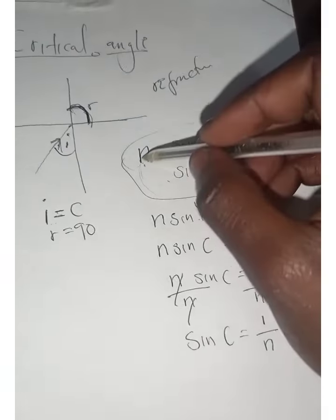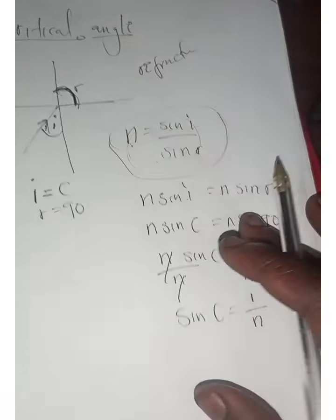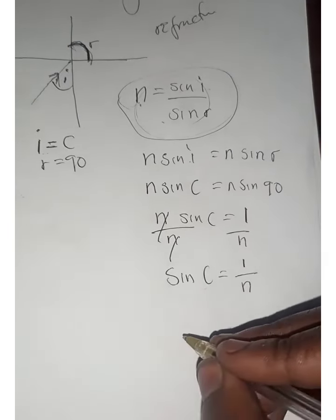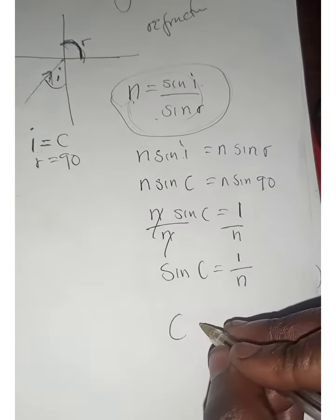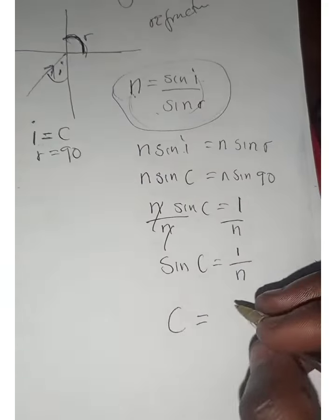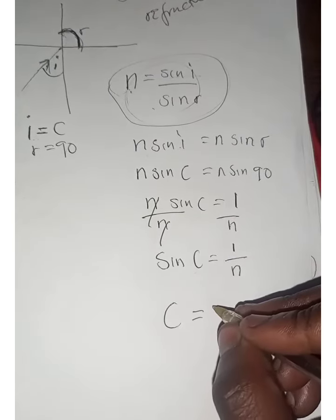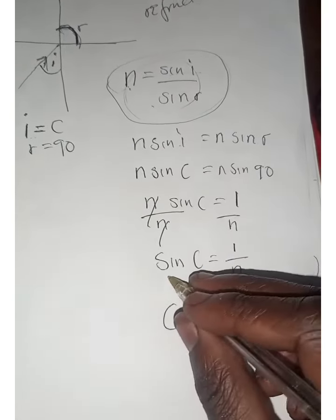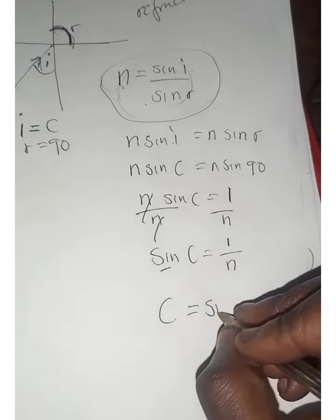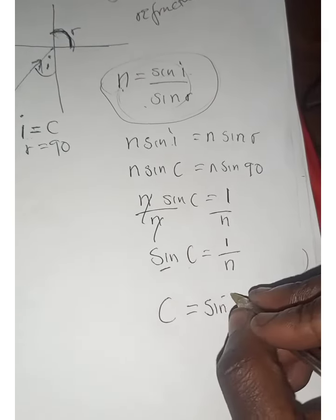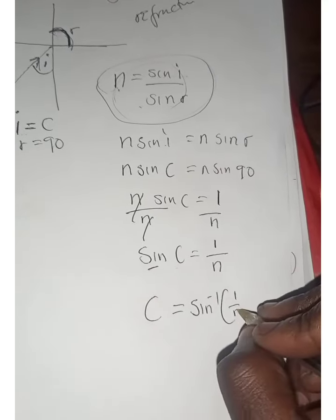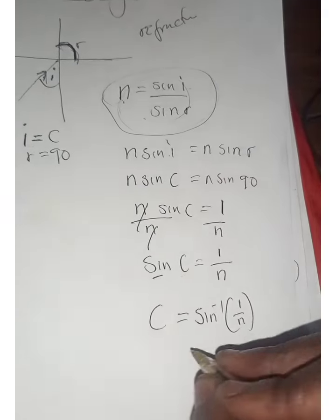If you want to isolate the critical angle, when sine crosses the equal sign it becomes inverse sine. So the formula is: critical angle equals sine inverse of one over n. This is the formula for finding the critical angle.